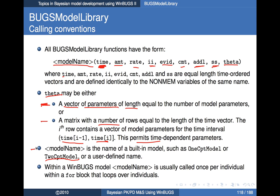When calling this function, notice we're passing a vector of times — the function calculates predicted values for that entire sequence of times. Typically you call this function once per individual in the context of a population PK model. So you would have that inside a for-block looping over all individuals, calling it once per individual within that loop.